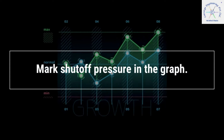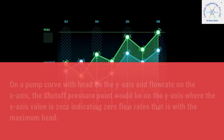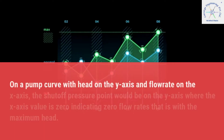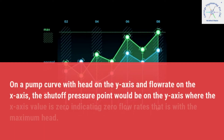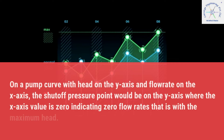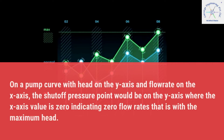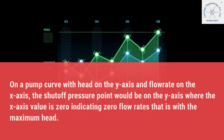Mark shut-off pressure in the graph. On a pump curve with head on the y-axis and flow rate on the x-axis, the shut-off pressure point would be on the y-axis where the x-axis value is 0, indicating zero flow rate with maximum head.